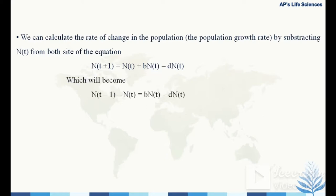For day 2, the original population is 130: N2 = 130 + 0.4×130 − 0.1×130 = 169. We can calculate the population growth rate by rearranging the equation: N(t+1) − Nt = b·Nt − d·Nt, which simplifies to N(t+1) − Nt = (b − d)·Nt.